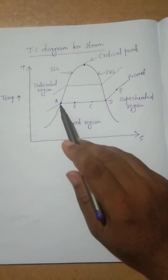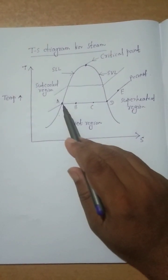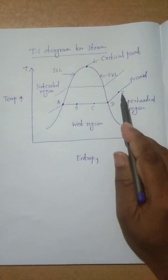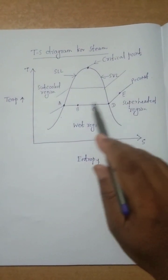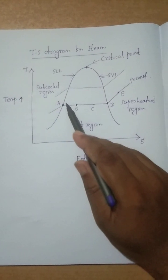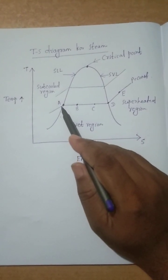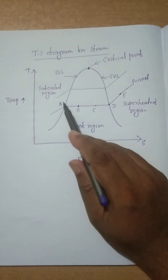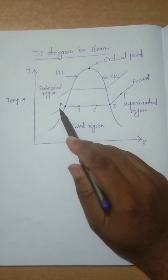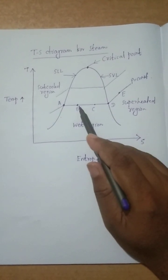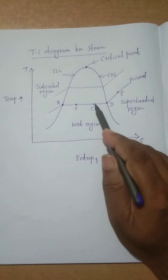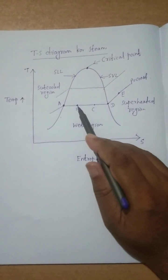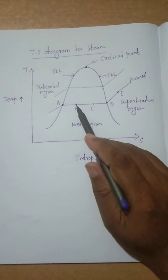Here we have marked points A, B, C, D, and E on the diagram. Point A is situated on the saturated liquid line, which means if the working substance is present at point A, it is 100 percent liquid.